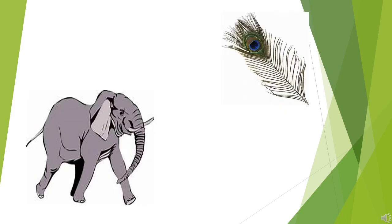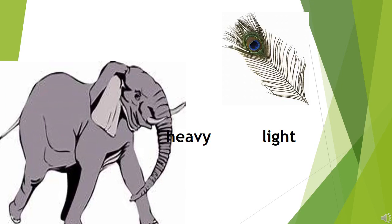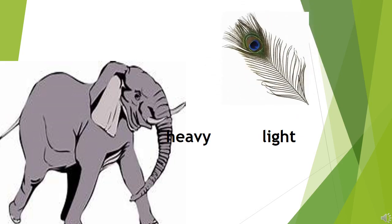Children, let's see the opposite of heavy. The opposite of heavy is light. Heavy, light. Now children, you can see in the picture one elephant is there. Can you lift the elephant? No, because an elephant is very heavy — you cannot lift an elephant. But can you lift one feather, a bird's feather? Yes, because it is very light; you can lift it very easily. So opposite of heavy is light.